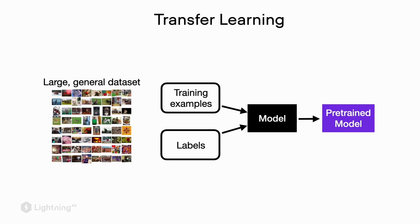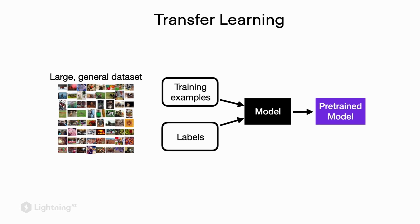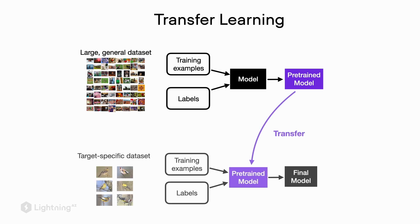Here we have an example of step one in transfer learning, where we pre-train the model on a large general dataset. On the left-hand side we have this large general dataset for which we have the training examples with the class labels. The training examples and class labels are used in the model during training to get the pre-trained model. Then in step two we use this pre-trained model and train it on our smaller target dataset to obtain the final model.